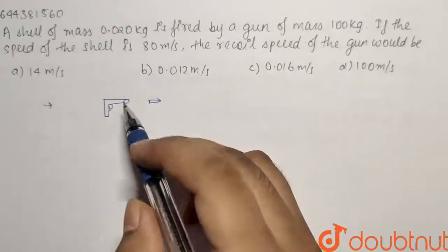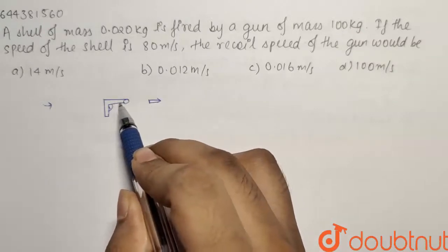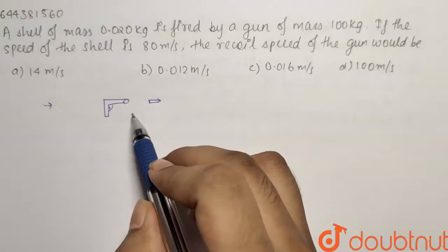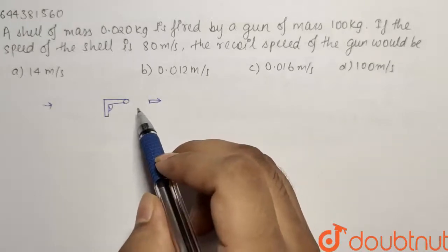...then the impulse that is acting on the bullet, the same impulse is acting on the gun in the reverse direction. So basically we can conserve momentum because on the whole system there is no impulse or force acting.